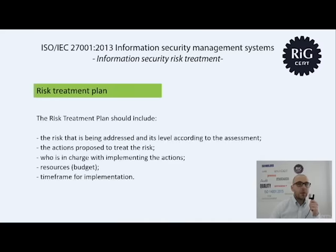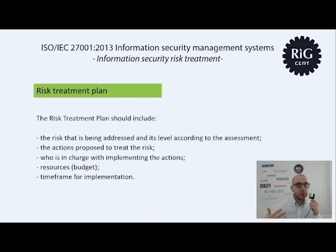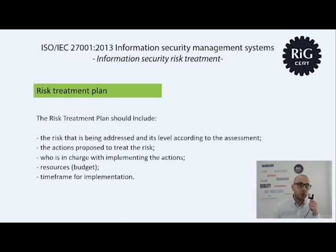The next step is for the organization to develop a risk treatment plan. This plan should include the risk being addressed, the risk level according to the assessment, the proposed actions to treat the risk, who is in charge — the person or department responsible for implementing the controls, what resources are needed for implementation, and the time frame for implementation.